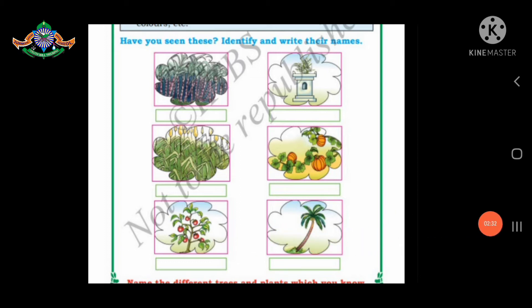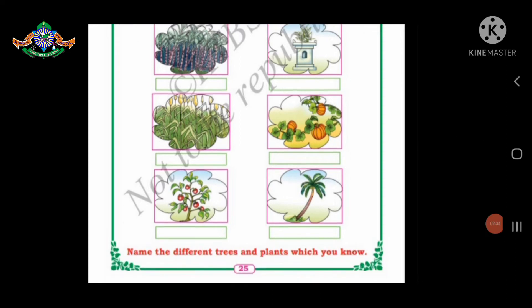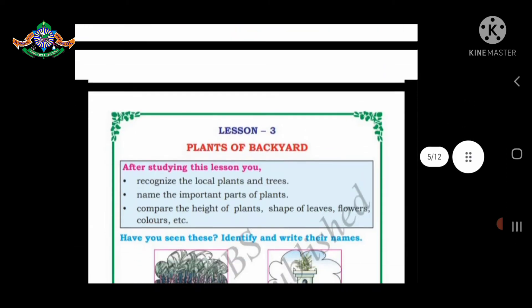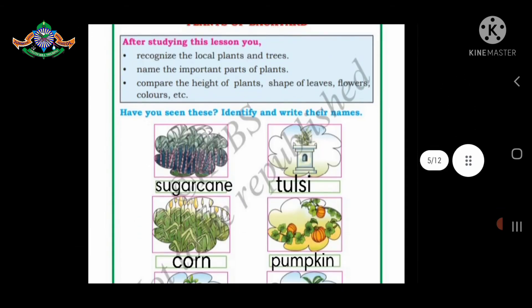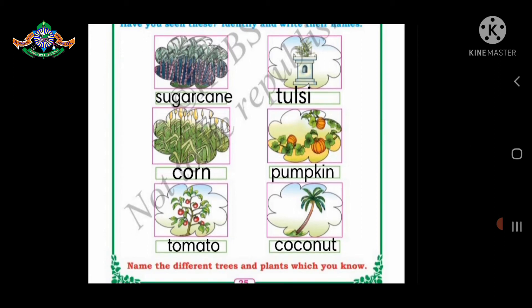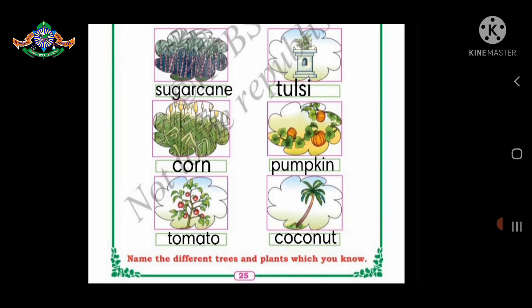Here you have to write these names in your textbook. Let me show you. First one is sugarcane, then tulsi, corn, pumpkin, tomato, and coconut. Like this, you have to write in your textbook neatly.